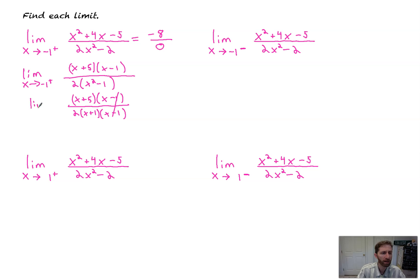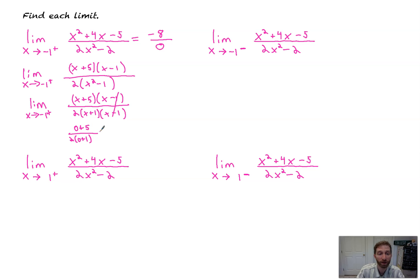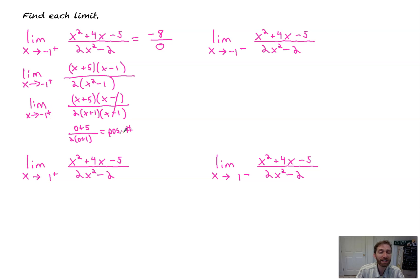The limit as x approaches negative one from the right. As we approach negative one from the right side, pick a number from the right side like zero. So zero plus five over two times zero plus one — that equals a positive number. So even though we get negative eight over zero, when we approach negative one from the right side, we see that we get a positive number out. So we're going to infinity, but we're going to positive infinity.